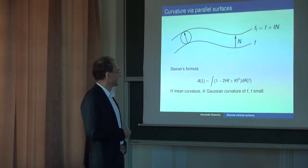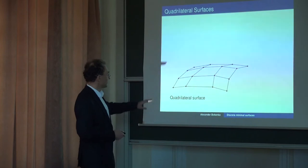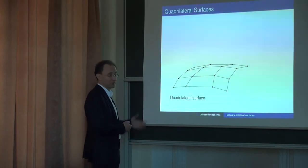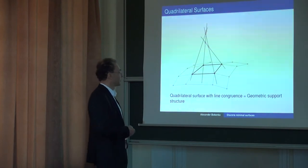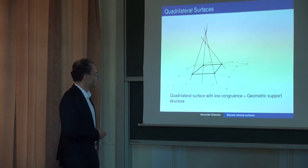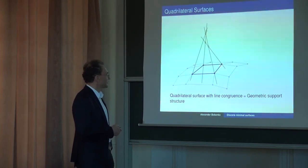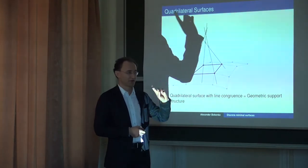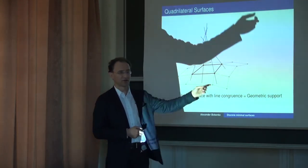Now let us look at quadrilateral surfaces. If you have a quadrilateral surface, there is a difference with the smooth theory because there is no canonical normal — you don't know what is the direction of the normal at a vertex. So let us take a surface with normals given to us, and they should satisfy one condition: the so-called line congruence condition. The normals at neighboring vertices of our surface intersect or are coplanar.